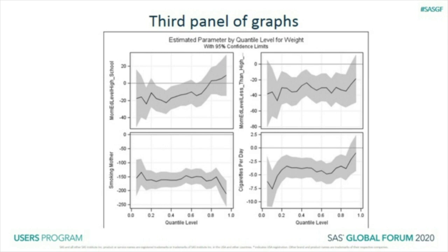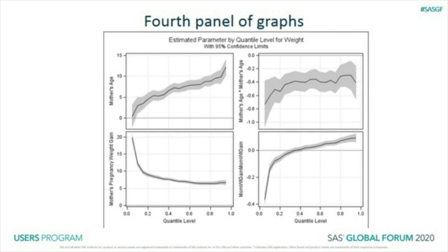Smoking women had lighter babies but the difference was fairly constant. Number of cigarettes also made a bit of a difference. Older women had heavier babies — about 10 grams per year — making a bigger difference at the high end. Mother's age squared was negative. Pregnancy weight gain is really hard to decipher because not only are the numbers very different, but the shapes are completely different, so I'll show how I managed this.